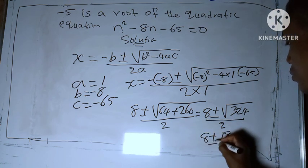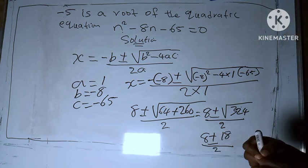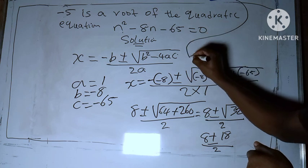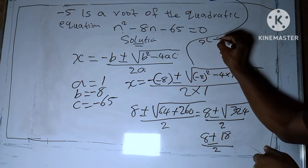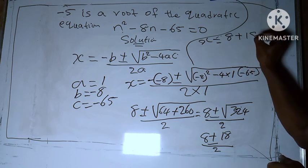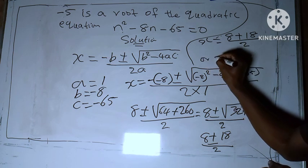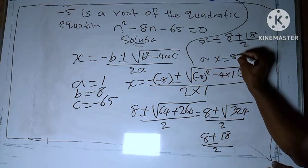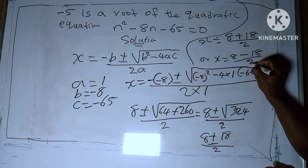...to give us 18, all over 2. Okay, let's solve it here. So we have x = (8 + 18) / 2 or x = (8 - 18) / 2.